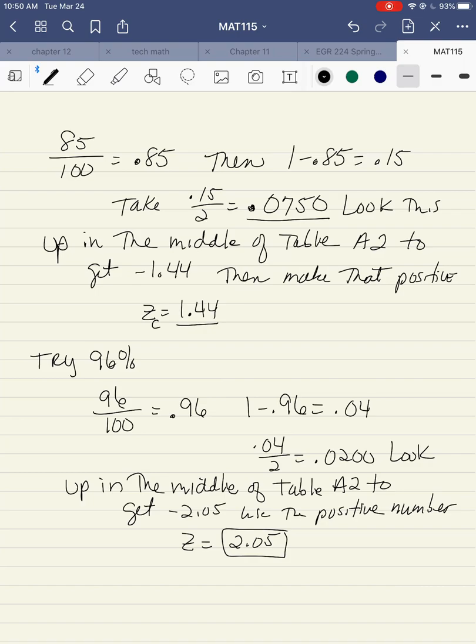Let's try another one, 96%. 96%, again, is not on the chart. So you first convert it to decimal. 96 divided by 100 is 0.96. Subtract it from 1, so you get 0.04. Divide that by 2. It becomes 0.0200.